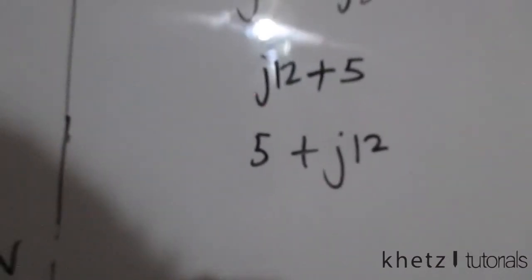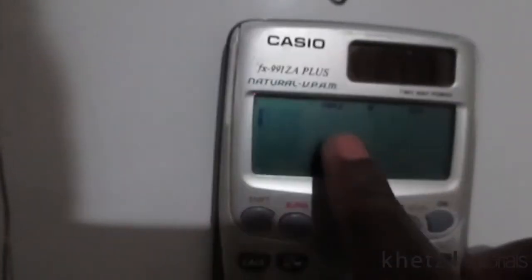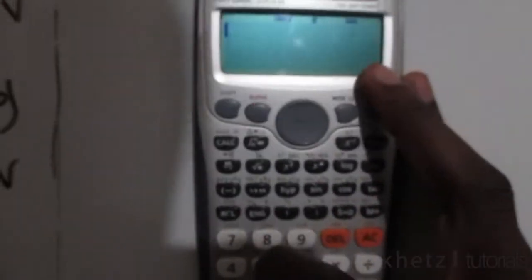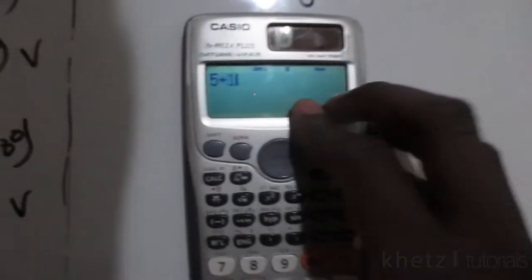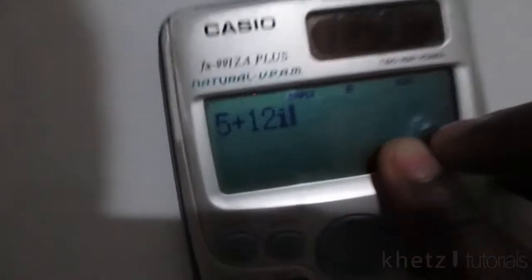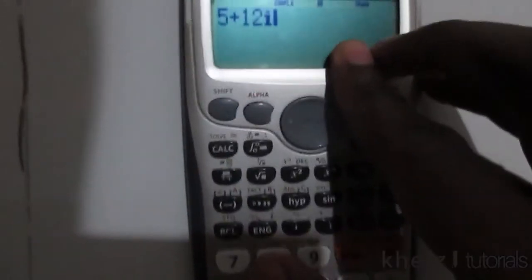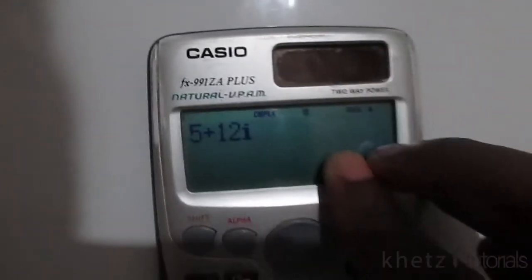Now you can punch this into your calculator to transform it into polar form. So let's do that quickly. What you do is just punch in 5 + 12i, and your i, remember you use this ENG button.